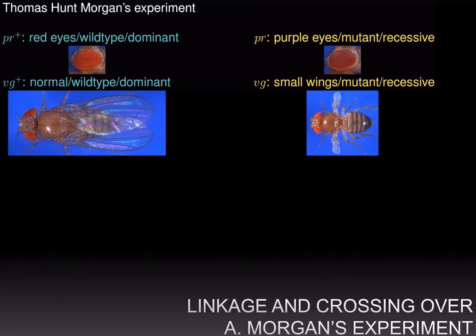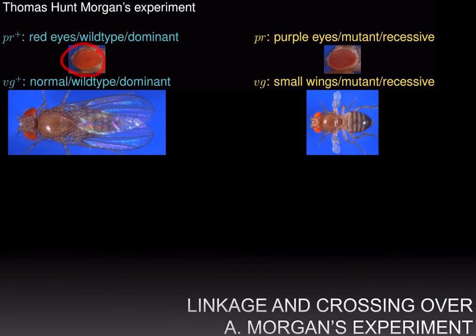Let us discuss some terminology and notation. If you collect fruit flies, or Drosophila melanogaster, in the wild, they will always have red eyes. Phenotypes that occur naturally in the wild are called wild type phenotypes. However, you can find alleles or mutants that do not show the phenotype that you see in the wild.